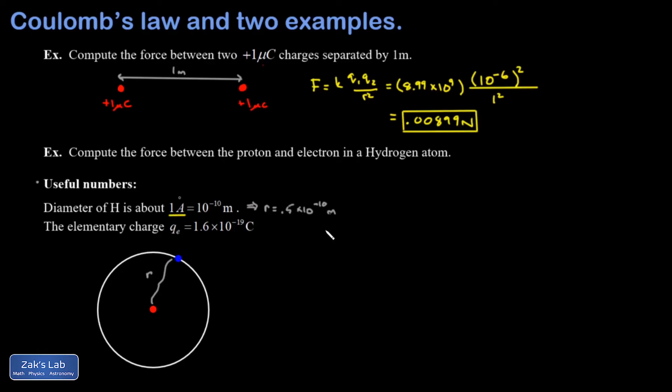Now that's the charge magnitude on the proton and the electron. The difference is that the electron has a minus sign. So if I write that into my picture, my proton has a charge of plus QE. My electron has a charge of minus QE. So we plug into Coulomb's law.